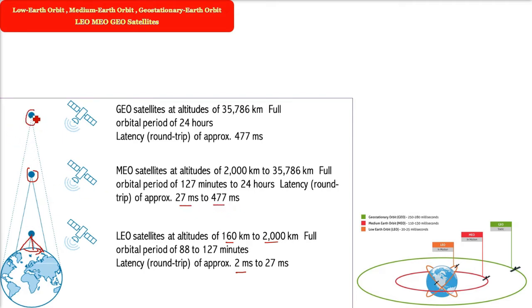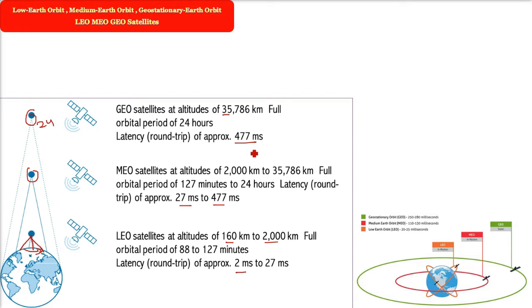Coming to Geostationary — GEO satellites are at an altitude of 35,786 km, or about 36,000 km. The orbital period is 24 hours, meaning it will appear stationary — it rotates at the same time as the Earth. Latency for the round trip is approximately 477 ms for Geostationary Earth Orbit.